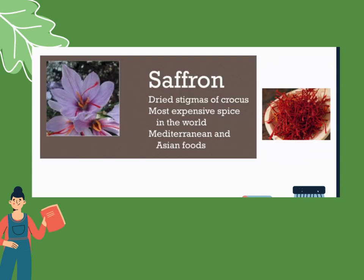Next is saffron — the dried stigma of the crocus flower. Yung makita niyo yung red na part, yan po yung ginagamit as spice. Saffron is considered the most expensive spice in the world. It is used in Mediterranean and Asian foods. Napakamahal po nyan kasi konti lang yung nagpo-propagate, kaya kapag binenta sa market, napakamahal.